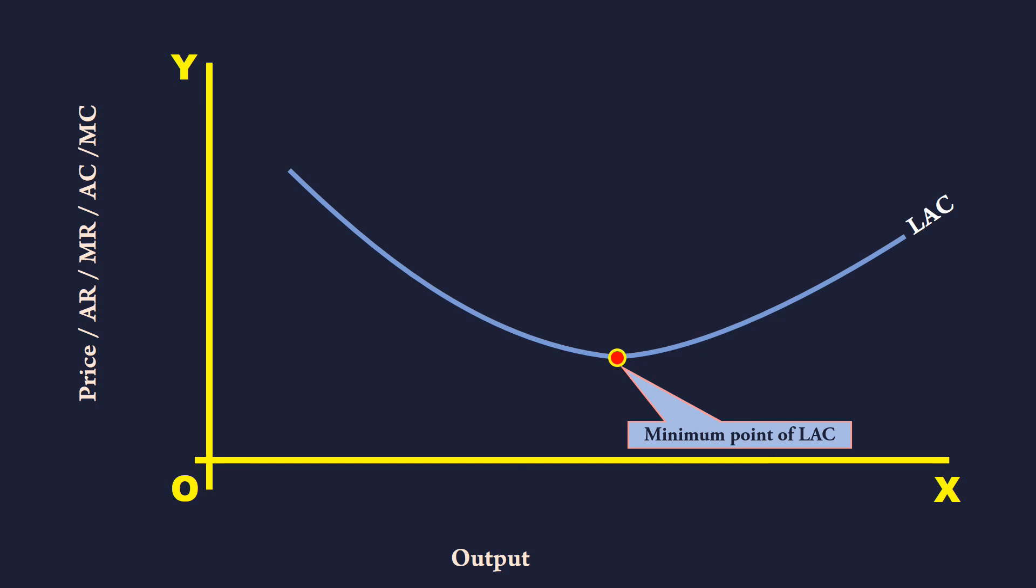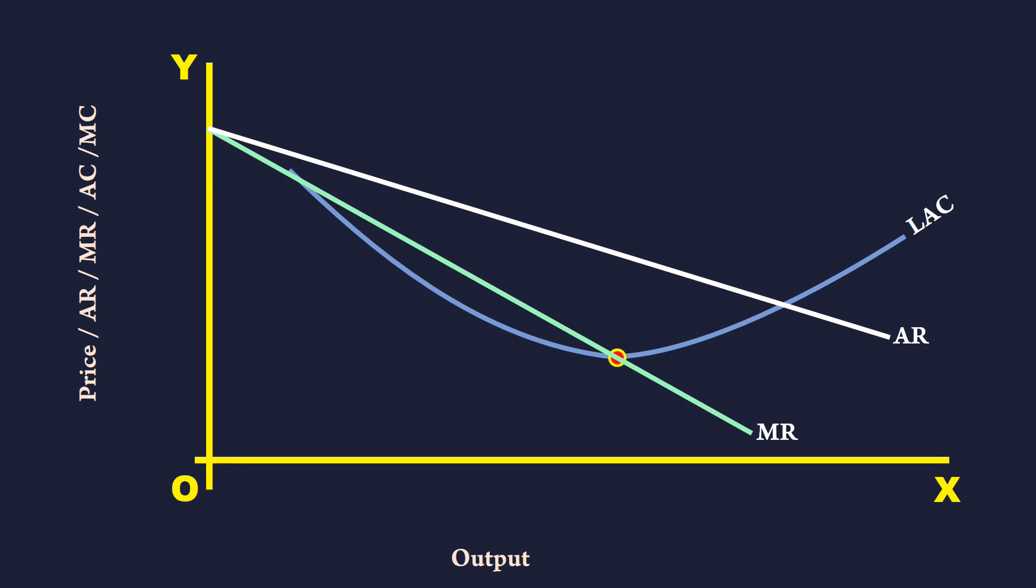The present market condition is given by AR and MR curves. Long run marginal cost curve LMC cuts the marginal revenue curve MR at point E.